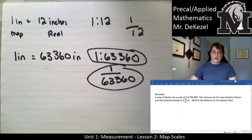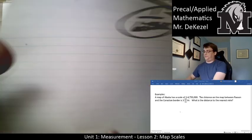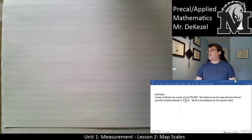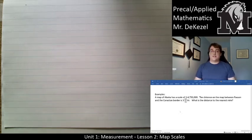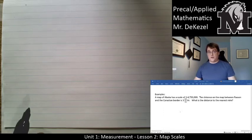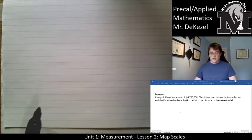A map of Alaska has a scale of 1 to 4,750,000. The distance on the map between Paxson and the Canadian border is 3 and 11/16 inches. So we're talking inches here. What is the distance to the nearest mile? So we know that we have 3 and 11/16 inches.